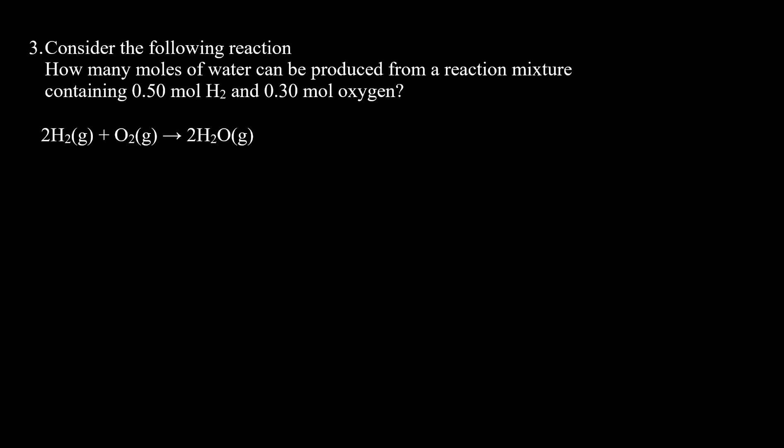In question 3, we have the reaction 2H₂ + O₂ → 2H₂O. How many moles of water can be produced from a mixture containing 0.50 mol H₂ and 0.30 mol O₂? In a regular stoichiometry problem we have one reactant and calculate based on that. When we have values for both reactants, we must perform our calculation based on the limiting reactant. There are two methods — I'll explain both.